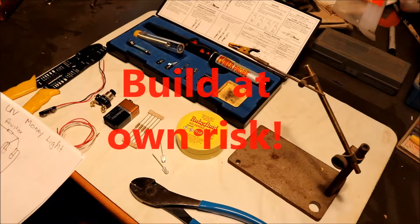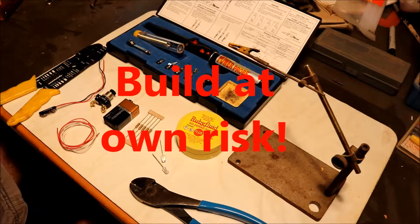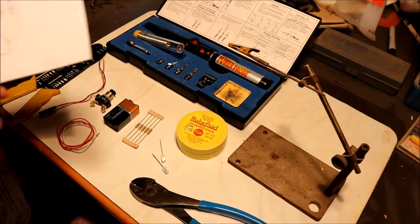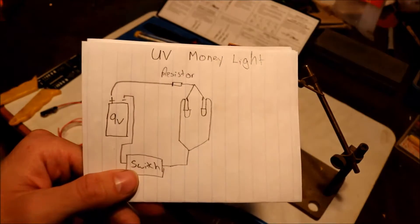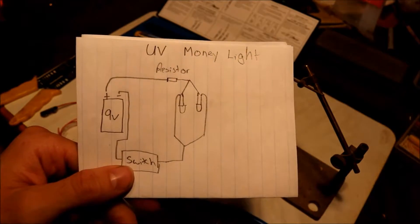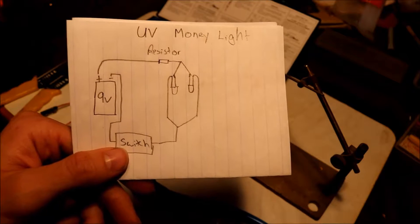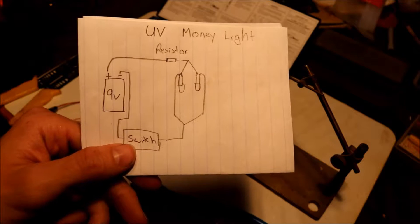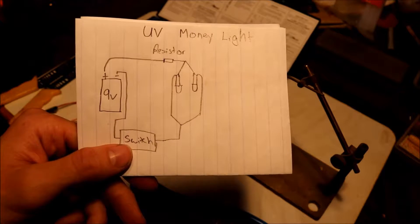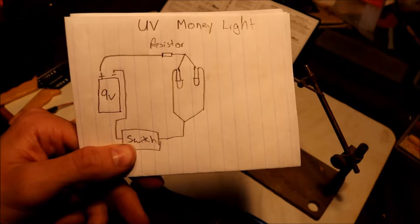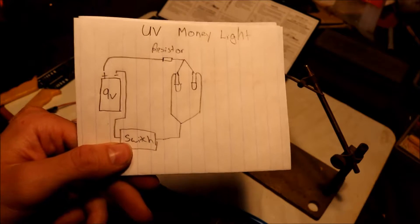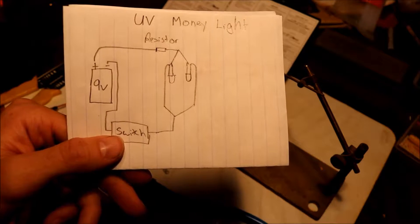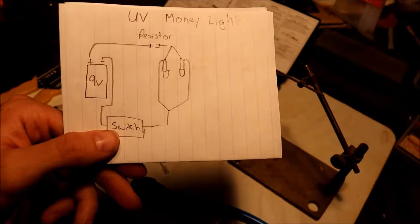Okay, today we are going to be making a UV money light detector. Here's a simple diagram. Got the 9-volt battery, a resistor, two UV LEDs, simple switch heading back to the battery. These are going to be ran in parallel. For the resistor, you can go online and find a calculator and figure out what size resistor you need.